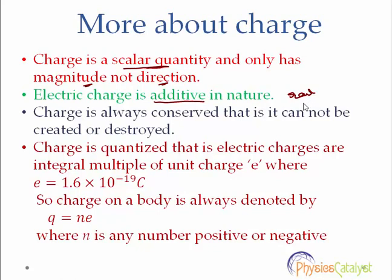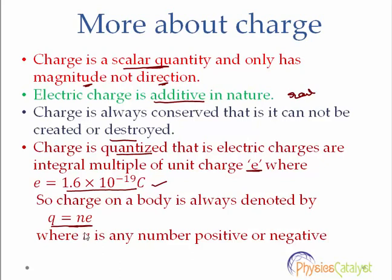Thirdly, electric charge is always conserved, like energy — that is, you cannot create or destroy electric charge. Electric charge is quantized, meaning electric charge is an integral multiple of the unit charge E, whose value is equal to 1.6 × 10⁻¹⁹ coulombs. This is the magnitude of the charge on an electron or on a proton. Hence, the charge on a body is always denoted by q = nE, where n is any integer and it could be positive or negative.